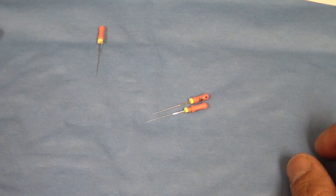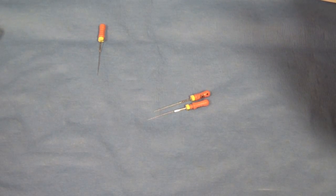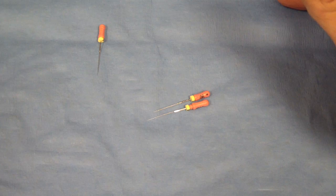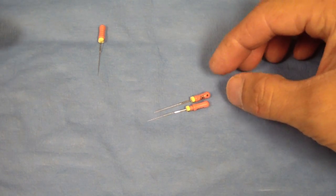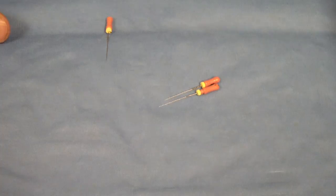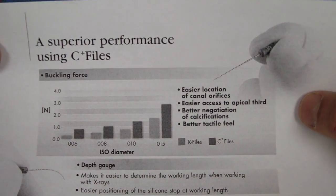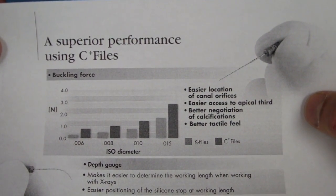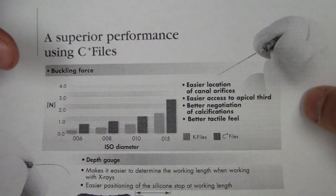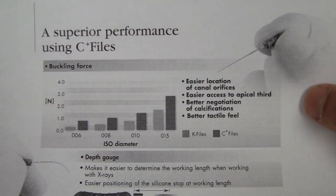Now there's a whole wide range of C plus files in different strengths and different file sizes. But essentially what they are, according to the brochure which I have right here from online, they have superior performance. The whole real point is that they're stiffer than the regular K file.